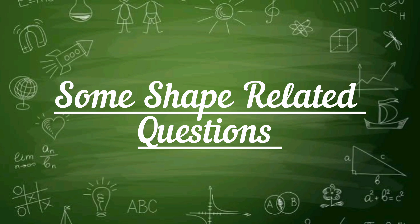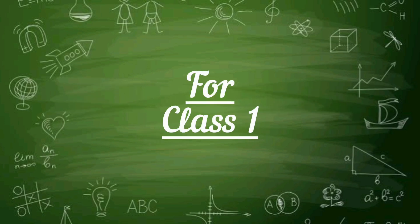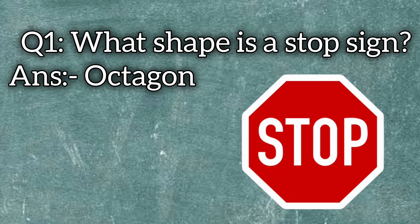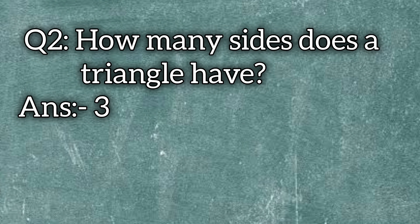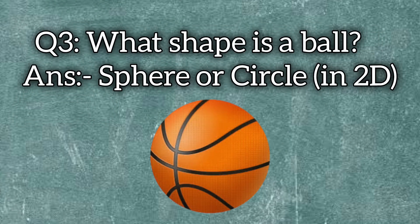Some shape-related questions for Class 1. What shape is a stop sign? The answer is octagon. How many sides does a triangle have? The answer is three. What shape is a ball? The answer is sphere or circle.